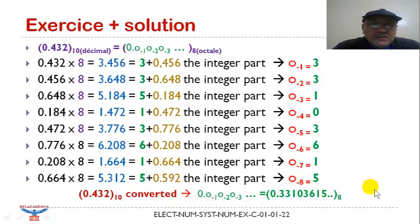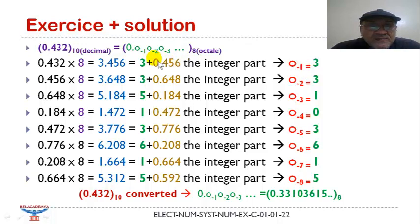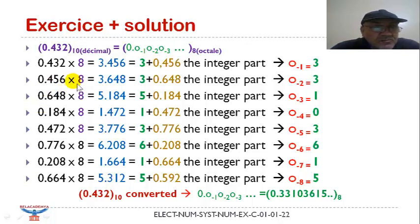For the conversion to octal, we take the fractional decimal number and multiply it by 8, the base. The result gives an integral part equal to the first coefficient, so a sub 8 minus 1 is the first coefficient. We take the fractional part and multiply it by 8 again; we obtain a result in which 3 is the integral number, so a minus 2 is equal to 3.